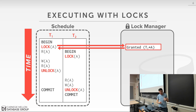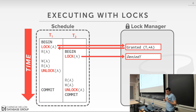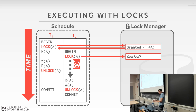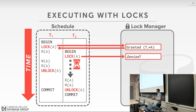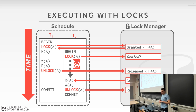Now say transaction T2 starts and wants the lock on A. The lock manager knows it already gave that lock to T1, so it denies T2's request. T2 has to stall and wait. Whether it waits inside the lock manager or gets sent to a scheduler — that's left to the implementation. Then T1 finishes and unlocks A. The lock manager sees T2 was waiting, so it grants the lock to T2. T2 can run and commit, then releases the lock.